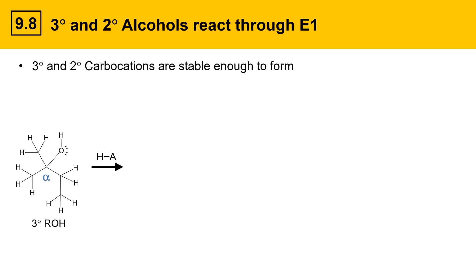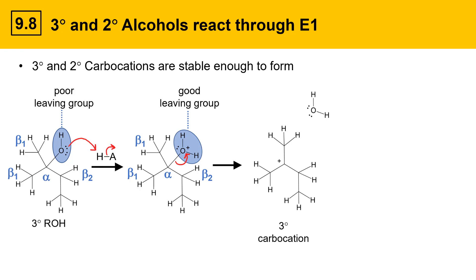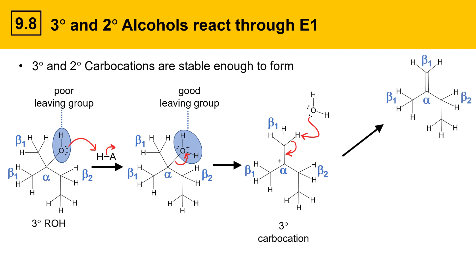Here's a representative tertiary alcohol. The acid-catalyzed process is shown here with a generalized acid HA. This structure has an alpha position that the OH group is attached to, two equivalent beta-1 positions which are the methyl groups, and a beta-2 position which is unique. The OH group is a poor leaving group, so it needs to be protonated. The alcohol grabs the proton off the acid catalyst, producing a protonated OH group — now a good leaving group. Since this is a tertiary substrate, the carbocation that forms is tertiary and stable enough to form.